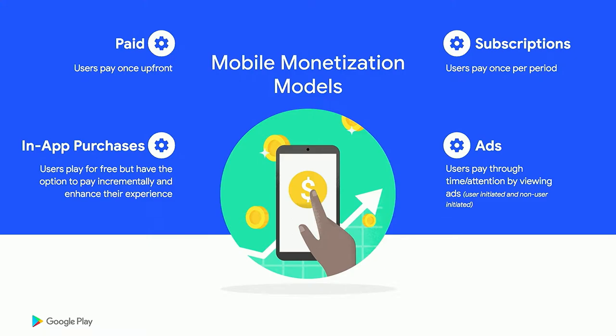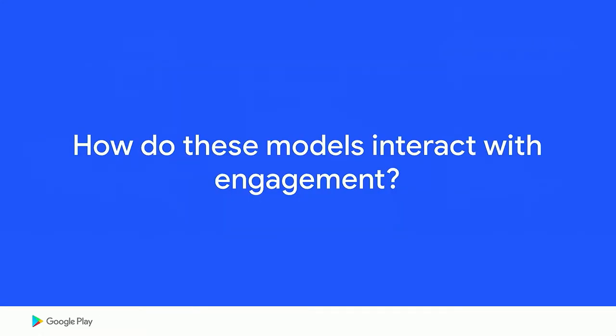We have paid apps, where the user pays once up front. We have subscriptions, where the user pays once per period. Then we have in-app purchase apps, where the app is usually free and users pay to enhance their experience. Then we have ads-driven apps, where the app is usually free but users pay with their time and attention by viewing ads. Ultimately, the end goal for both apps and games is to drive engagement in hopes to monetize their users. But how do each of these monetization models interact with the user's engagement?